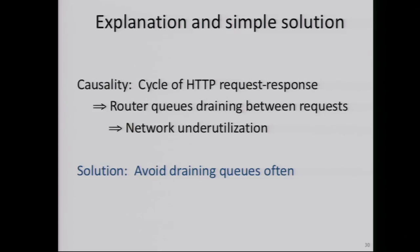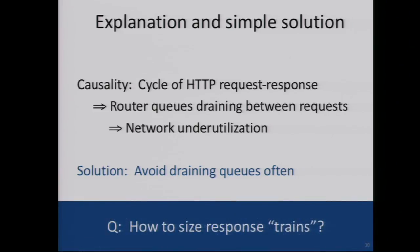The interesting thing in academic work is sometimes when an explanation seems simple, the solution is actually easier to implement. At a high level, the solution is to avoid draining the queues that often. The question is how do we actually want to size our response trains — how do we size those long sets of responses we get from the network to minimize underutilization, while still giving enough space to do adaptive bit rate encoding?